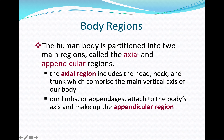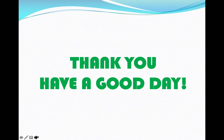The human body is partitioned into two main regions: axial and appendicular — used in both the skeletal and muscular systems. The axial region includes the head, neck, and trunk, which comprise the main vertical axis of the body. The appendicular region consists of the limbs or appendages attached to the body axis. Thank you so much, see you in the next lecture.